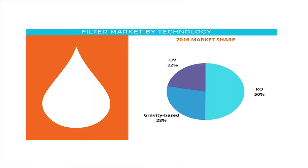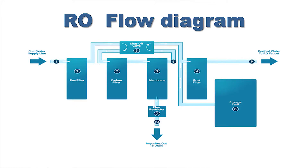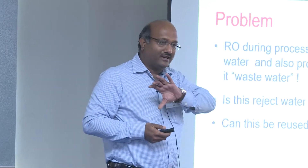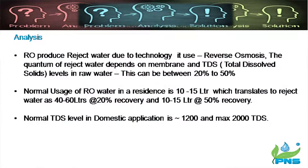The RO has a 50 percent market share worldwide, not just in India, compared to gravity-based purifiers, UV systems, and others. The flow diagram shows the technology progression. Due to the nature of RO technology, it produces reject water. People call it waste water, but it's not waste — it's reject water. The RO purifies the water and the concentrated impurities go into the reject stream. The question is: can this be reused?